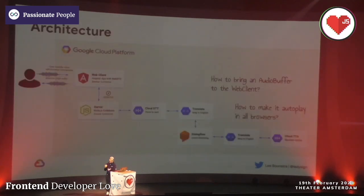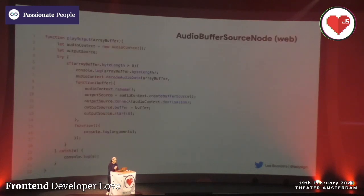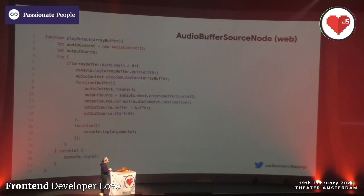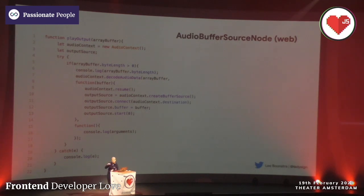So then we get the audio buffer and we have the answer. Now the only question is how can we make it auto-play in the browser? For that I'm using the audio buffer source node within the browser. You create an audio context, pass the stream in as an array buffer, decode the audio data, and assign it to an output source — in my case, the speakers of the browser. There's a small quirk because on iOS it won't start auto-playing, so I had to resume it first and then start it afterwards.